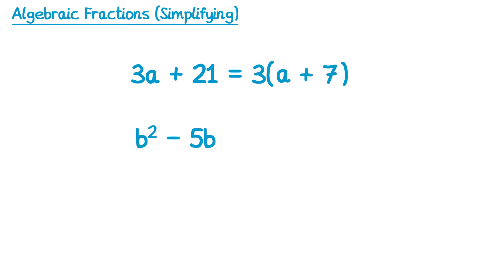For this one here we can factorise out a b, so it would be b, and then inside the brackets, to get from b to b squared I need to multiply by b, and to get the negative 5b I would need to multiply by negative 5.